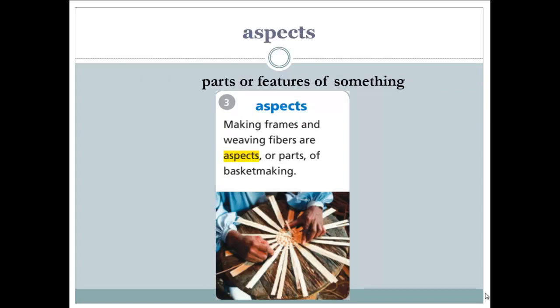The next word: aspects. Aspects are the parts of something, or the feature or characterization of something. Let's read the example: making frames and weaving fibers are aspects, or parts, of basket making. To make frames and to weave fibers — these are parts of the process of basket making, or features and characterizations of it.